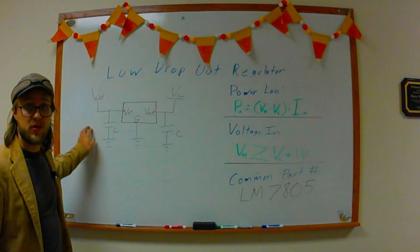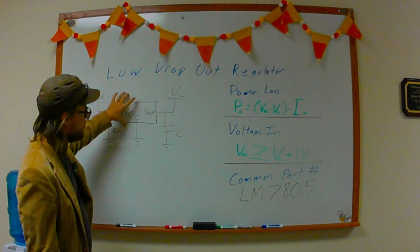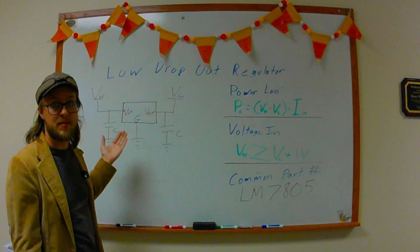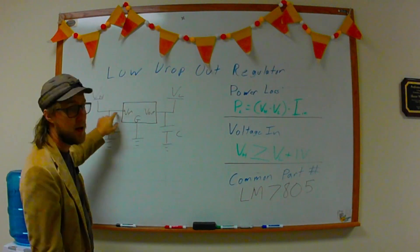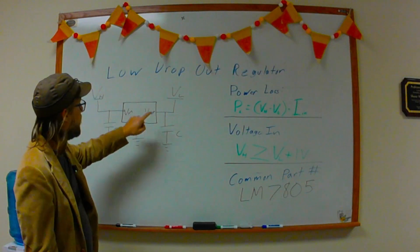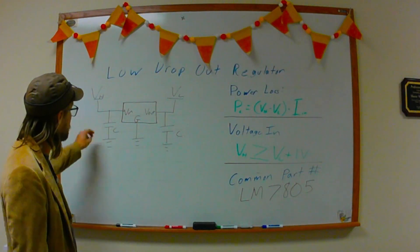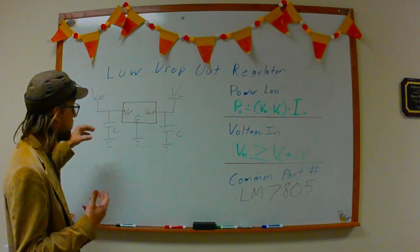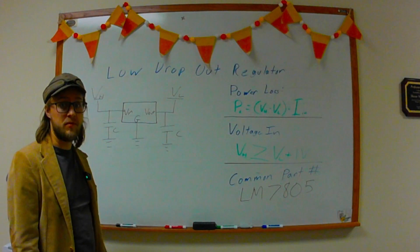So, our circuit for a low dropout regulator is pretty straightforward. We've got this three-pin device, and commonly we'll have some sort of heat sink associated with it. And we have our voltage in, and our voltage out, and of course a ground pin. Typically, it's really recommended that you have capacitors added on both the input and the output for stability reasons.